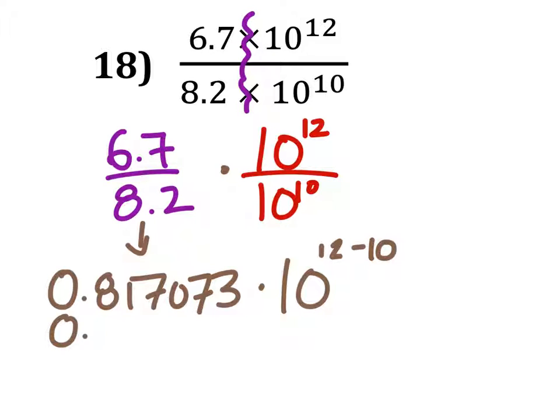So I get 0.817. I'm going to round that times 10 to the power of 2. But I've got to move that decimal over 1 to the right. That's correct.